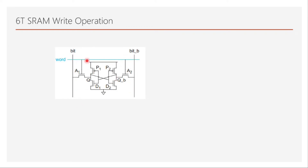If we assert the word line, we can write into this cell. Both bit lines are precharged high. Now if we assert the word line, will it just return to the skewed state? Absolutely not — because from the read constraint we understood that D1 is made strong enough that it will not allow Q to go high through the access transistor. That ratio is the read stability constraint, so writing a 1 directly this way is not possible.